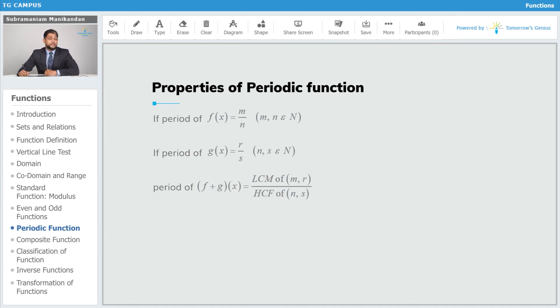Next, if the period of a function f(x) is given by m upon n where m and n are both natural numbers, and the period of g(x) is r upon s where r and s are also natural numbers, then the period of f(x) plus g(x) is given by the least common multiple of the numerators divided by the highest common factor of the denominators. So for example, period of sin x equals 2π, period of cos x also equals 2π, so here the period of...